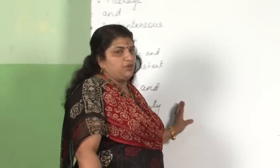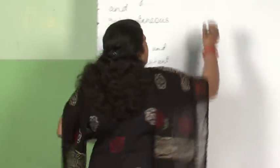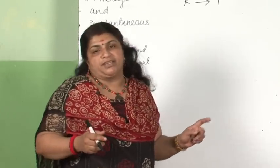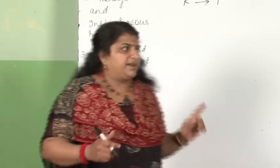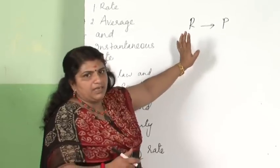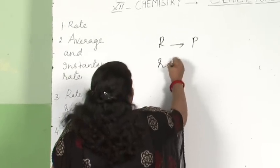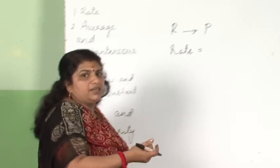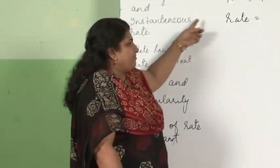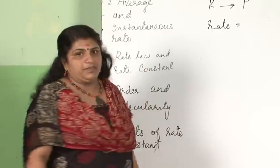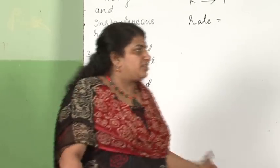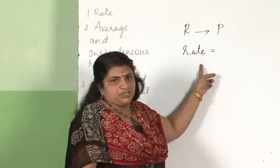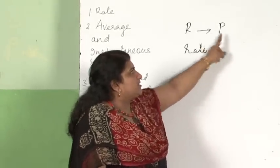What is meant by the rate of a chemical reaction? Consider a chemical reaction: reactant giving products. The rate means the speed with which a chemical reaction takes place. The rate of a chemical reaction can be expressed either in terms of reactants or in terms of products, as we studied in chemical equilibrium last year.